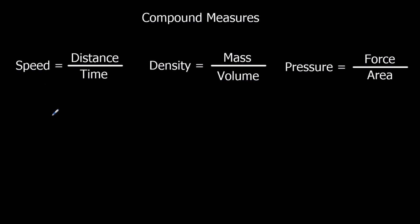In some cases, you might see these as formula triangles. Speed: distance time. Density: mass volume. And pressure: force area.